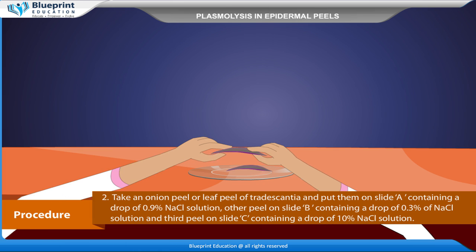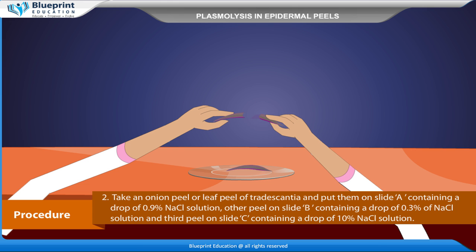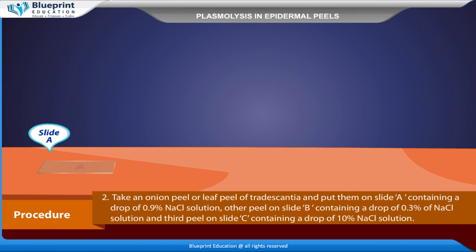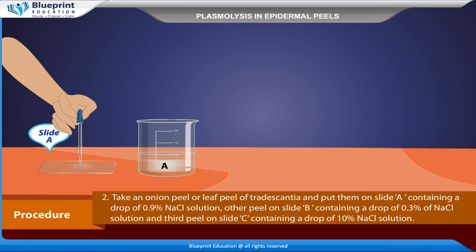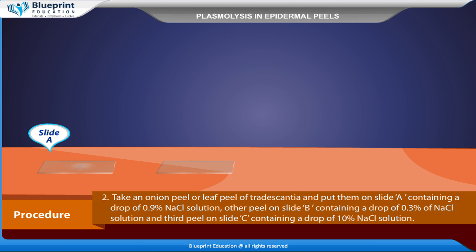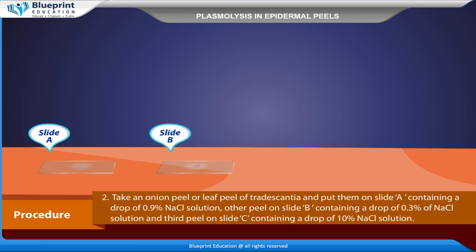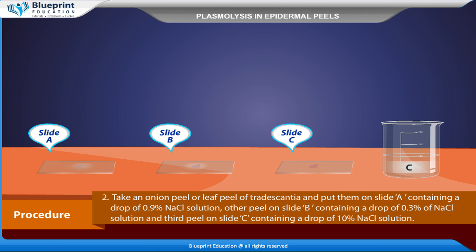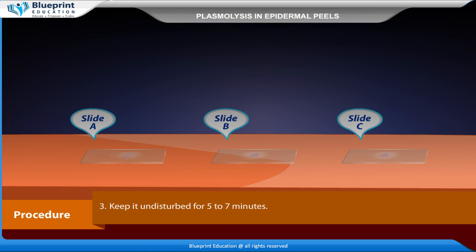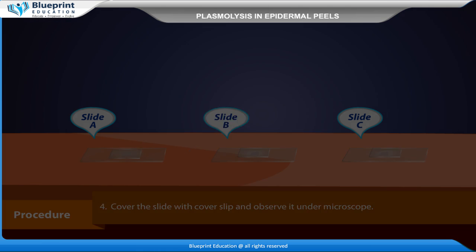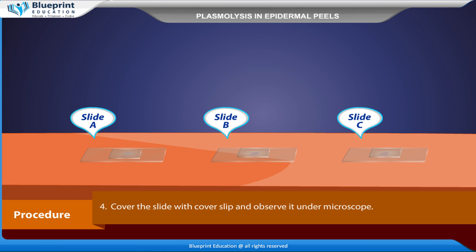Take an onion peel or leaf peel of Tradescantia and place it on slide A, containing a drop of 0.9% NaCl solution. Place another peel on slide B, containing a drop of 0.3% NaCl solution, and a third peel on slide C, containing a drop of 10% NaCl solution. Keep undisturbed for 5–7 minutes, then cover each slide with a cover slip and observe under the microscope.